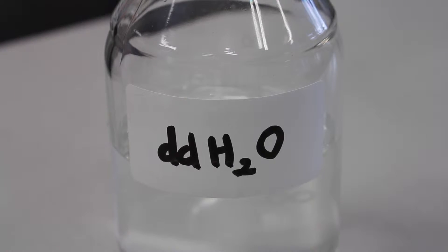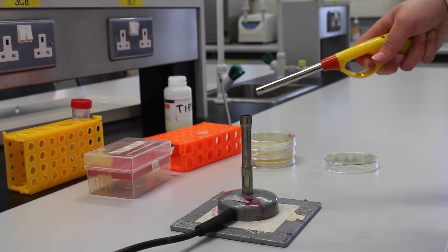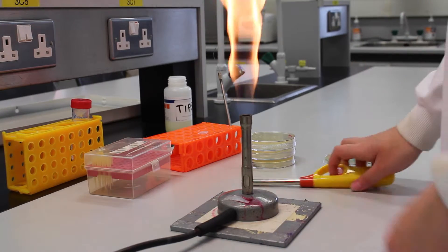Also a petri dish containing colonies and distilled water. The Bunsen burner will provide aseptic conditions to prevent contamination.